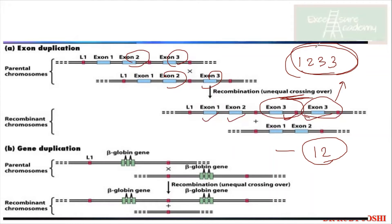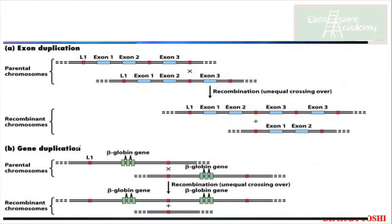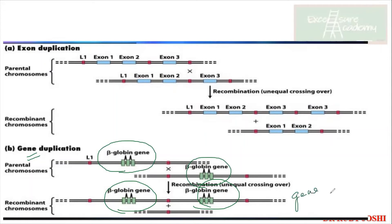Gene duplication also happens similarly. If an entire globin gene duplicates via unequal crossing over, one recombinant chromosome gets two copies of the globin gene, and the other has none. This is gene duplication, analogous to exon duplication. The exon duplications work the same way as gene duplications through unequal crossing over — both are studied in more detail in genetics.